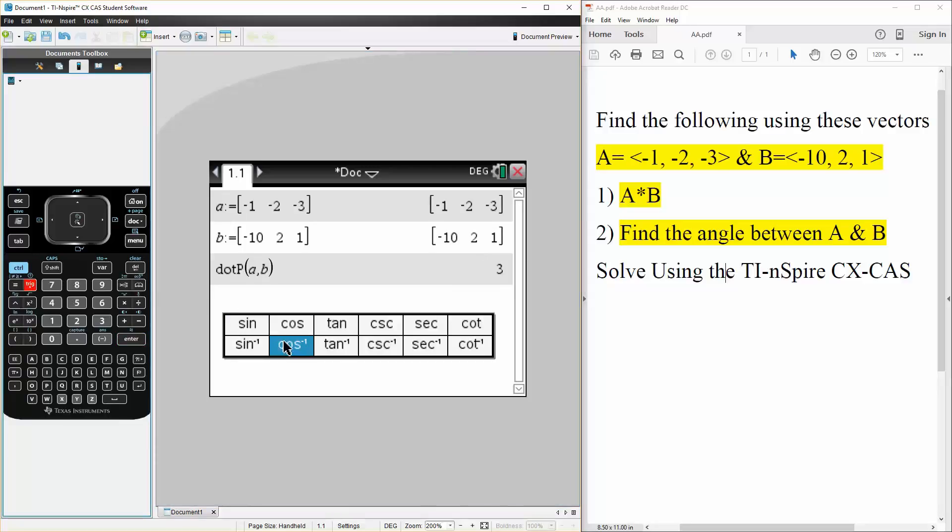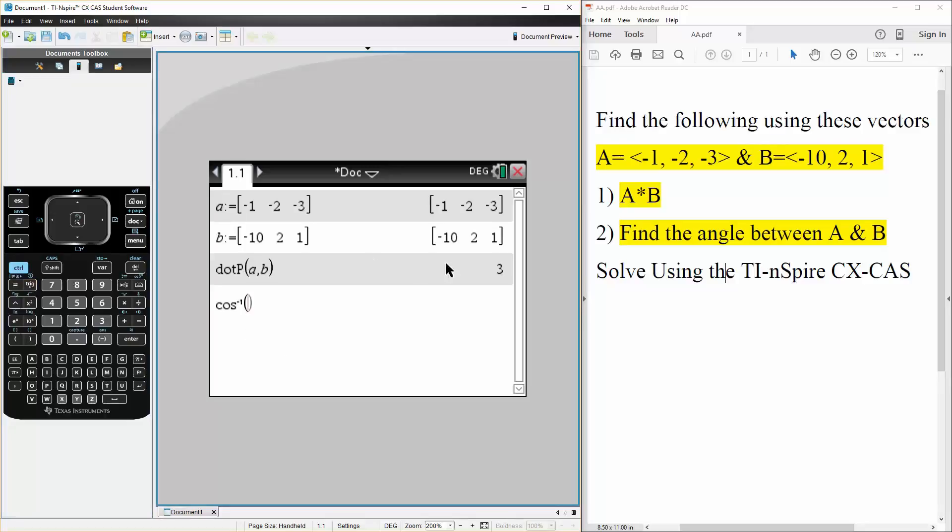So it would be cosine inverse, the dot product is 3, so 3 divided by the magnitude of A. So magnitude of A is going to be 1 squared is 1, plus 2 squared is 4, plus 3 squared is 9, times the magnitude of B. So negative 10 squared is 100, plus 2 squared is 4, plus 1 squared is 1.